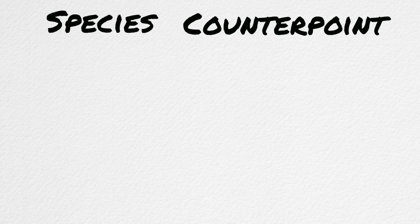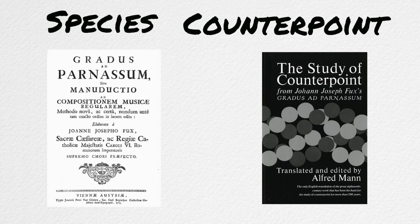I've always thought that this was a really cool name. Species counterpoint is a step-by-step method that teaches students the art of polyphonic melody writing. This method was written by Joseph Fuchs in his treatise Gradus ad Parnassum in 1725.